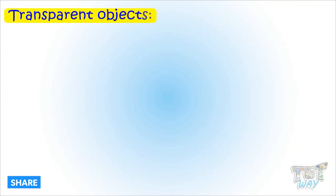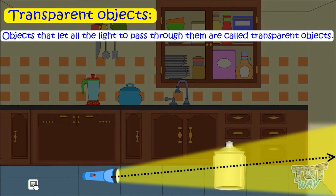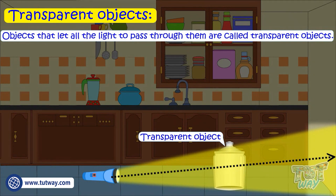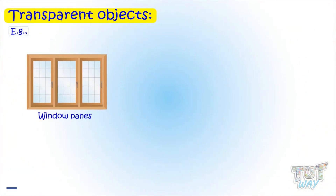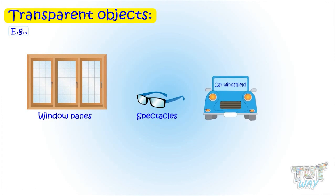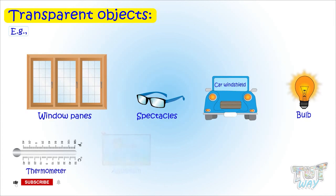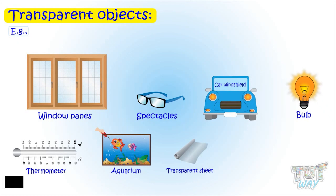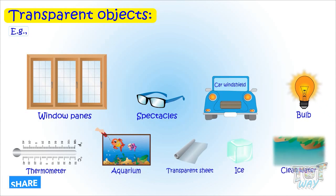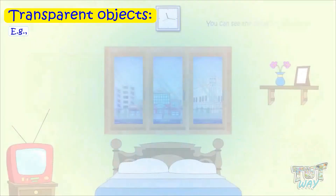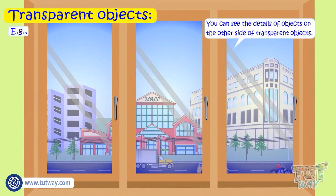Transparent objects. Objects that let all the light pass through them are called transparent objects or clear objects, like any clear glass or clear plastic. Examples include window panes, spectacles, car windshields, light bulbs, thermometers, aquariums, transparency sheets, ice, and clean water. You can see the details of the objects on the other side of transparent objects because all the light passes through.